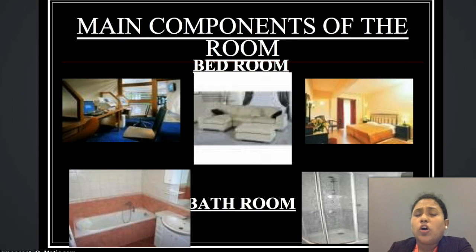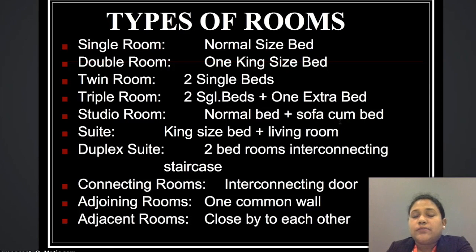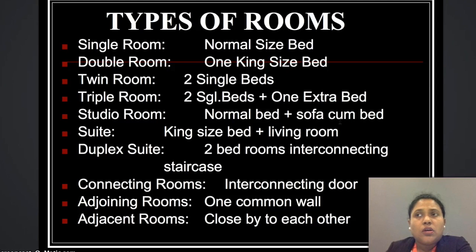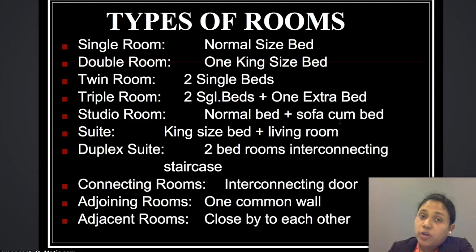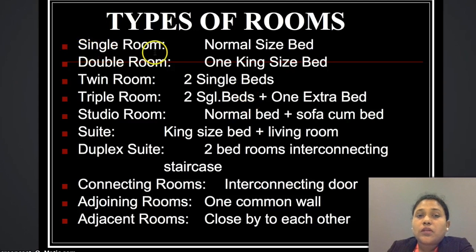The main components of a room are the bedroom and the bathroom. Types of rooms is a very important topic. In any hotel, there are various types of rooms — each sometimes named after their property's brand — but the basics start with a single room, which is a room with a normal sized bed.